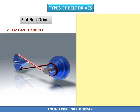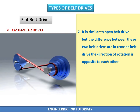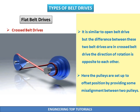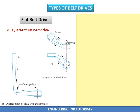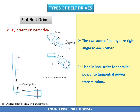Crossed belt drive: Cross belt drives are similar to open belt drives, but the difference is that in a cross belt drive the direction of rotation is opposite to each other. Both pulleys are set up in an offset position by providing some misalignment between them. In a quarter turn belt drive, the two axes of pulleys are at right angles to each other, and these drives are used in industries for parallel to tangential power transmission.